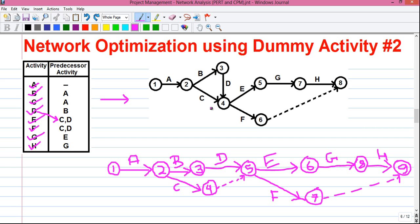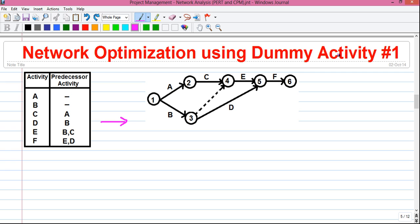So if you follow this procedure, not only can you draw the perfect network at one shot, but also you can save time during your exams. By removing this dummy activity and connecting activity D at this point, you can make the diagram more compact and can save an event. I hope I was able to make you understand the concept. If you are still confused, then please watch my previous video, Network Optimization Using Dummy Activity Part 1. That will help to clear your doubts.